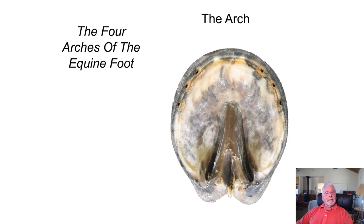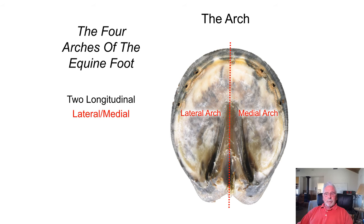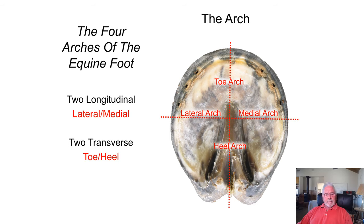Let's define the arch. We're looking at the bottom of the horse's foot, and we can divide the foot into parts. If we put a transverse or longitudinal line through the foot, we now can have a lateral arch and a medial arch. Lateral is furthest away from the center of the animal; medial is towards the center. Drawing a line on the transverse plane through the center of the foot, we can develop a toe arch and a heel arch.